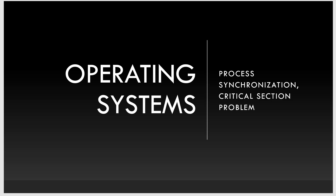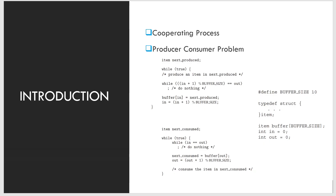Hello all, welcome to this video on operating systems. The topics we are looking into today are process synchronization and critical section problem. The cooperating process is one that can affect or be affected by other processes executing in the system. Cooperating processes can either directly share a logical address space — that is both code and data — or be allowed to share data only through files or messages.